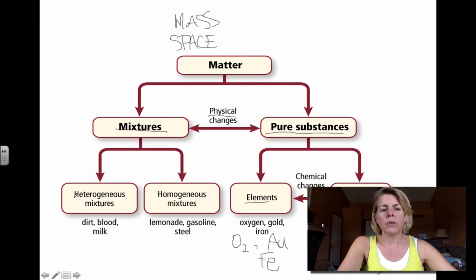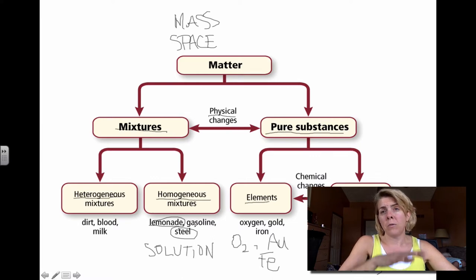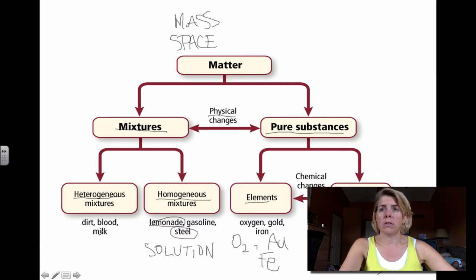Now under mixtures, we have two types: heterogeneous and homogeneous. With homogeneous, we have things like lemonade or steel. It doesn't all have to be liquid, it could be a solid. Another term for homogeneous is solution. It has to be all the same phase. So if you take a cross-section of it, they should all look the same. If they don't, like my lava lamp, we're talking about a heterogeneous solution. Dirt, blood, milk are all types of heterogeneous solutions.